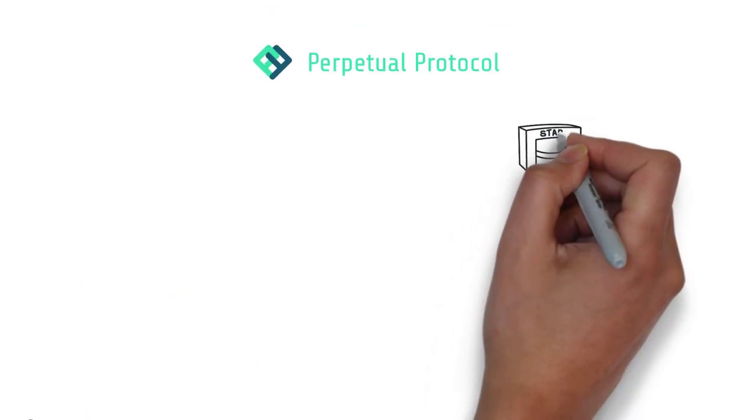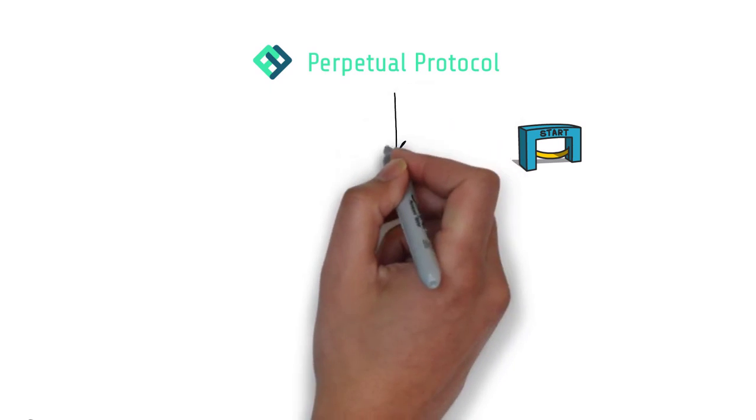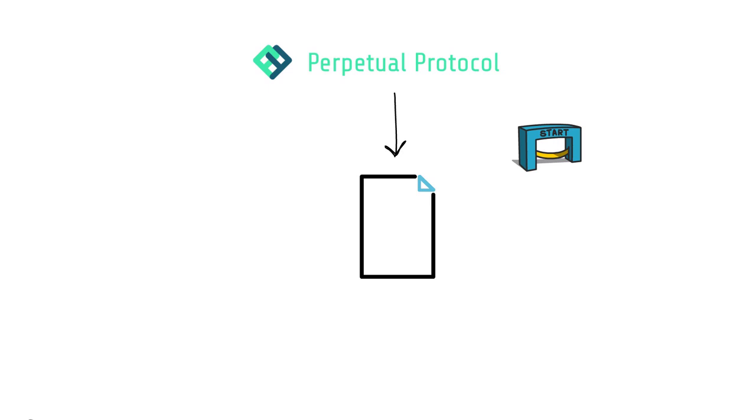Perpetual is yet another fairly new entrant into the decentralized derivative space. As the name suggests, Perpetual allows for trading perpetual contracts. A perpetual contract is a popular trading product in the cryptocurrency space used by well-known centralized platforms such as BitMEX, Binance, and Bybit.